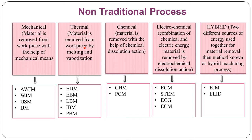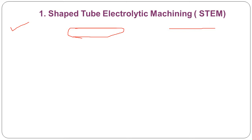These are the summary of non-traditional processes: mechanical — material removed by mechanical means, including AWJM, WJM, USM; thermal — material removed by melting and vaporization, including EDM, EBM, LBM, and Plasma Beam Machining; chemical; hybrid and electrochemical. Now we are going to see the details about Shaped Tube Electrolytic Machining, that is STEM (S-T-E-M).